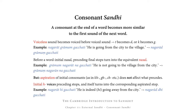Aspiration of initial consonants, however, does not affect the preceding sound. So if a word begins with Kh, Gh, Ch, Jh, and so on, this aspiration is not passed on to the sound at the end of the preceding word.